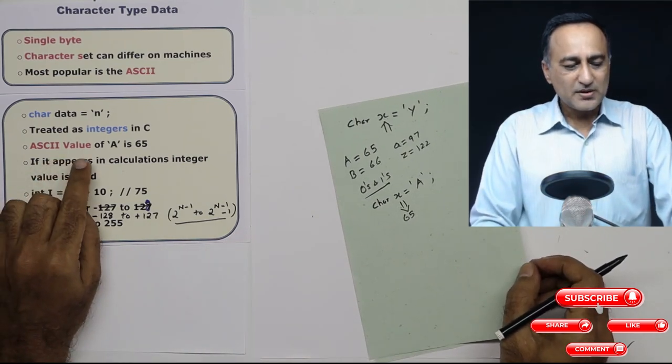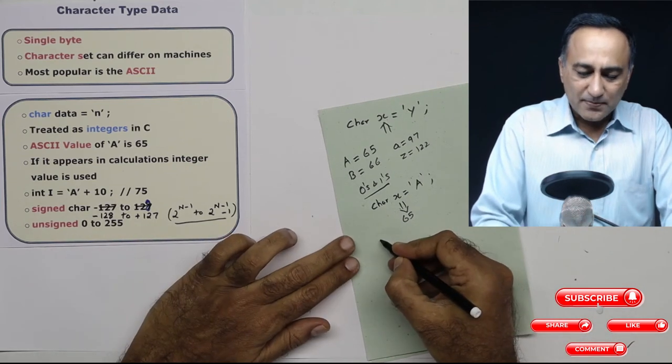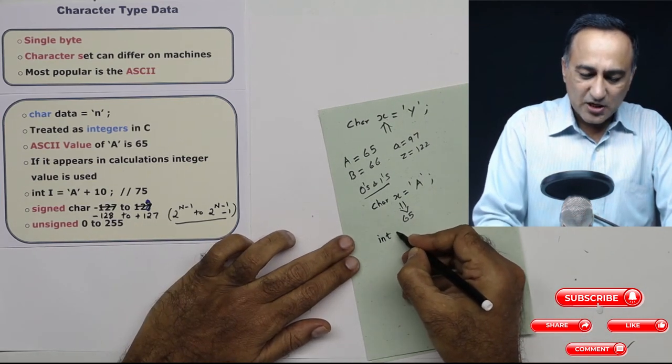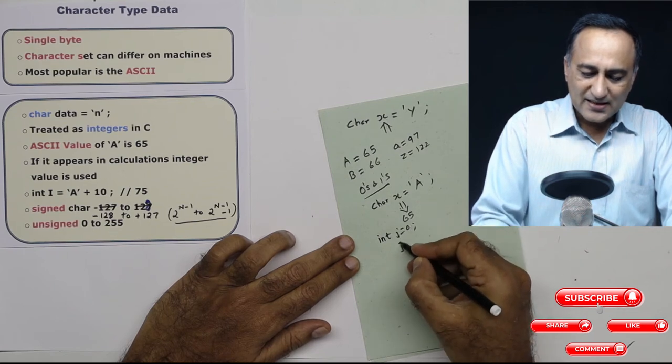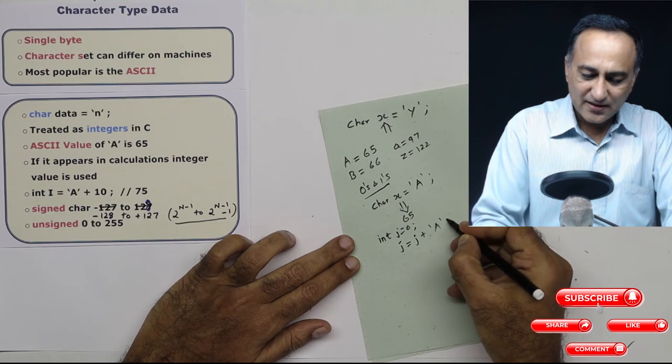So to start with, the ASCII value of a is 65. So suppose you do some arithmetic like this, I say int j is equal to 0. And I say j is assigned the value j plus character a.